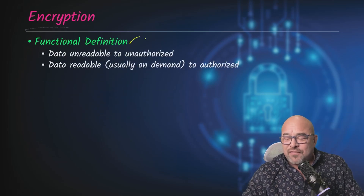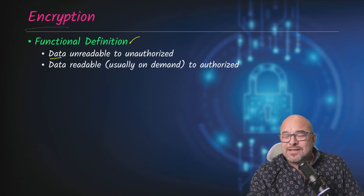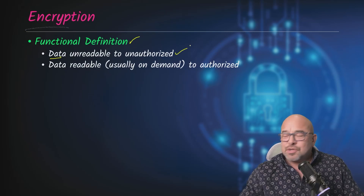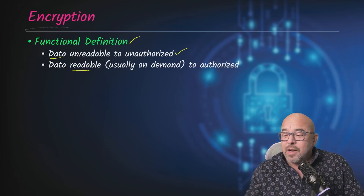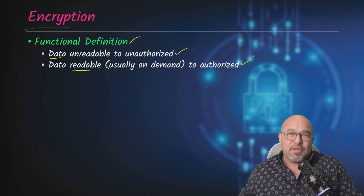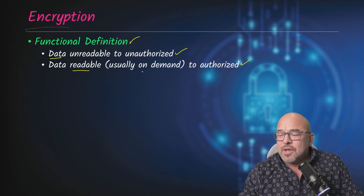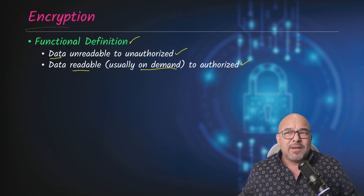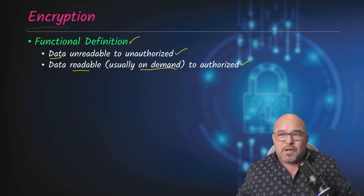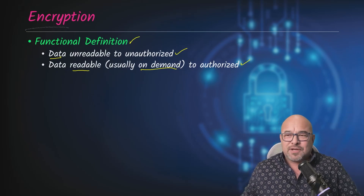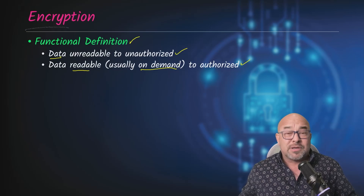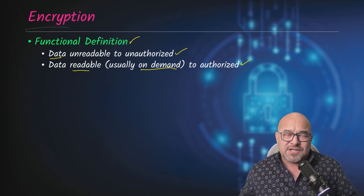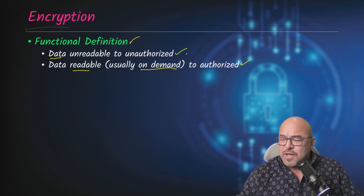If I could figure out a way to encrypt cat food, I would do it. But the functional definition here really is that we want the data to be unreadable to unauthorized persons. However, we want it to be readable by someone who is authorized, and we say usually on demand — meaning that we want to just click on it and see it. We don't want to have to type something in or jump through some kind of hoops or go through some kind of process to decrypt it.